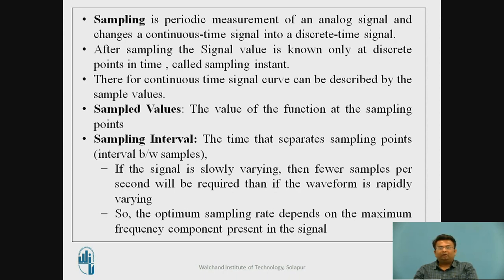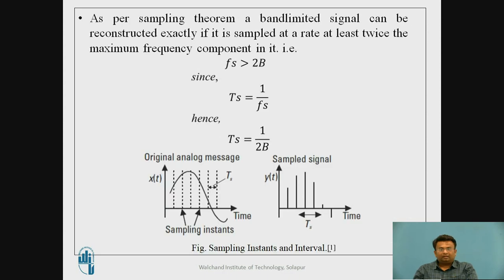The value of the function at a sampling point is called the sampled value. The time that separates two sampling points is called the sampling interval. As per the sampling theorem, a band-limited signal can be reconstructed exactly if it is sampled at a rate at least twice the maximum frequency component present in it — that is, Fs should be greater than 2B, where B defines the band-limited signal bandwidth.